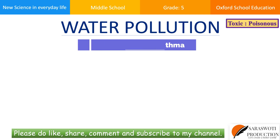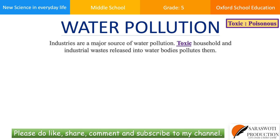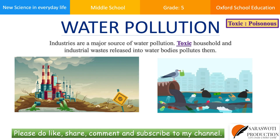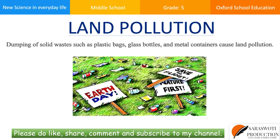Industries are a major source of water pollution. Toxic household and industrial waste released into water bodies pollutes them. Land pollution is caused by the dumping of solid waste such as plastic bags, glass bottles, and metal containers.